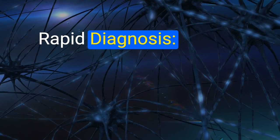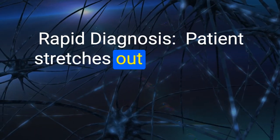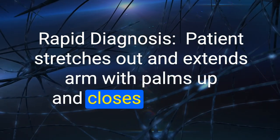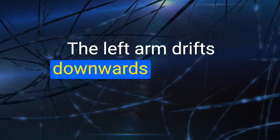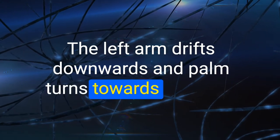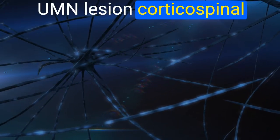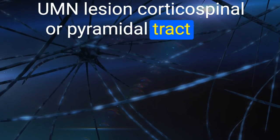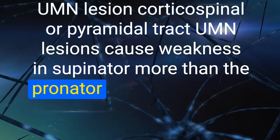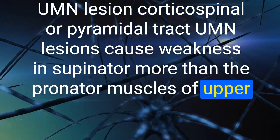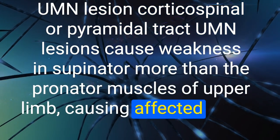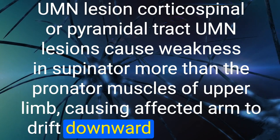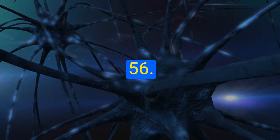55. Rapid diagnosis: patient stretches out arm with palms up, closes eyes, and the left arm drifts downward with palm turning toward the floor. Where is the lesion? UMN lesion of the corticospinal (pyramidal) tract. UMN lesions cause weakness in supinator more than pronator muscles of the upper limb, causing the affected arm to drift downward and pronate.